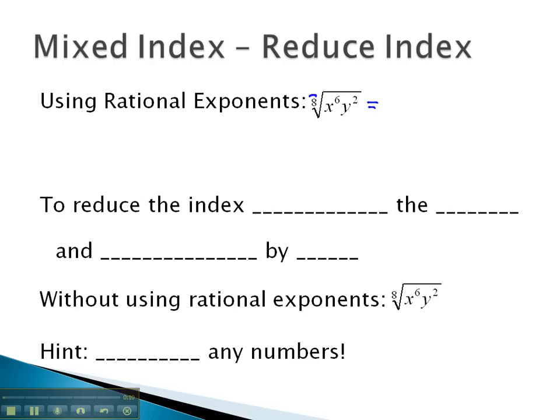We know with rational exponents, the index can become the denominator on the expression. We can write the x to the 6th as x to the 6 eighths, and y squared as y to the 2 eighths.